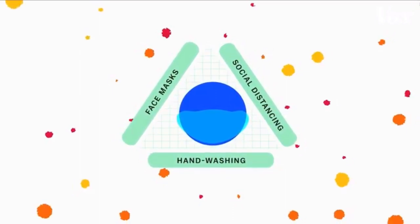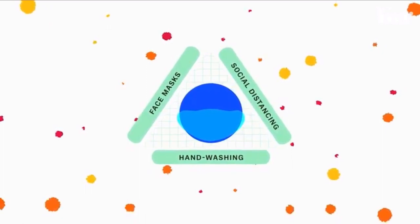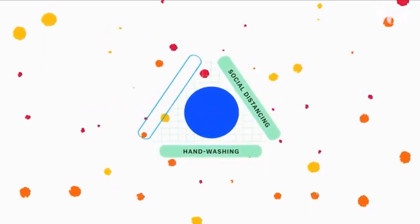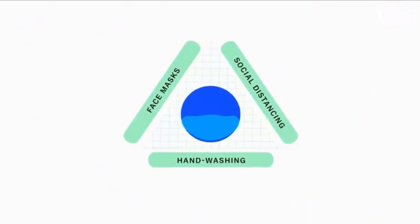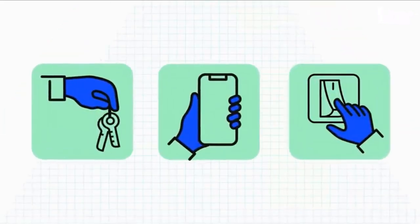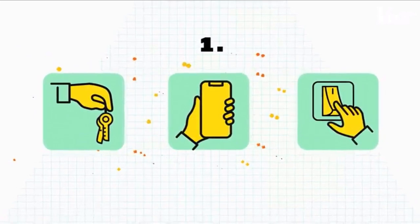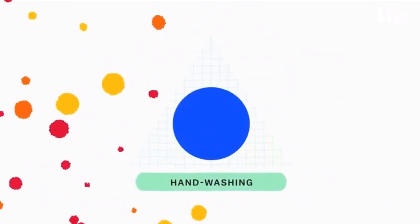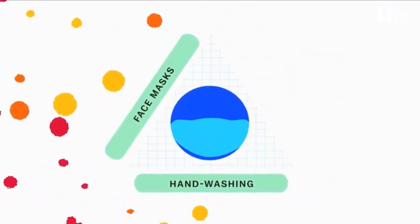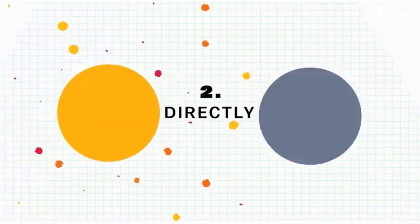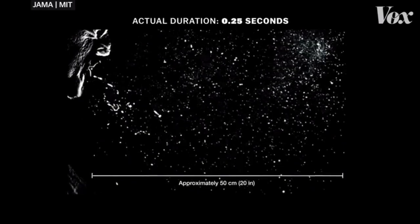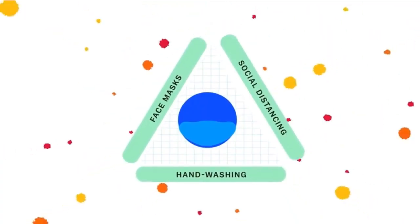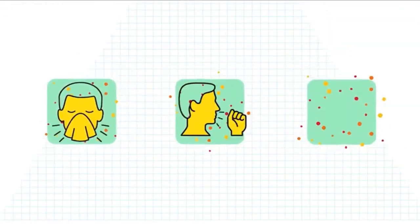We also talk about social distancing, hand washing, and face masks — these are all important. There are face masks, but they are not able to stop these viruses entirely. Face masks are used as a protective measure. Two ways viruses spread are through direct contact with an infected person, and social distancing helps reduce that.